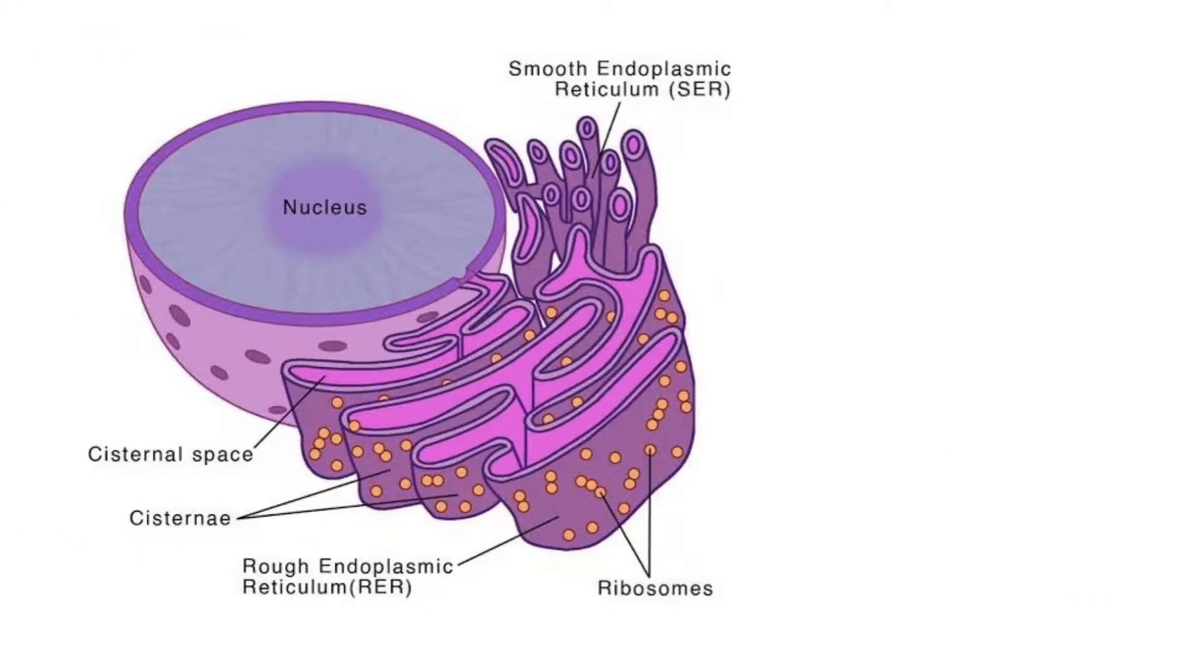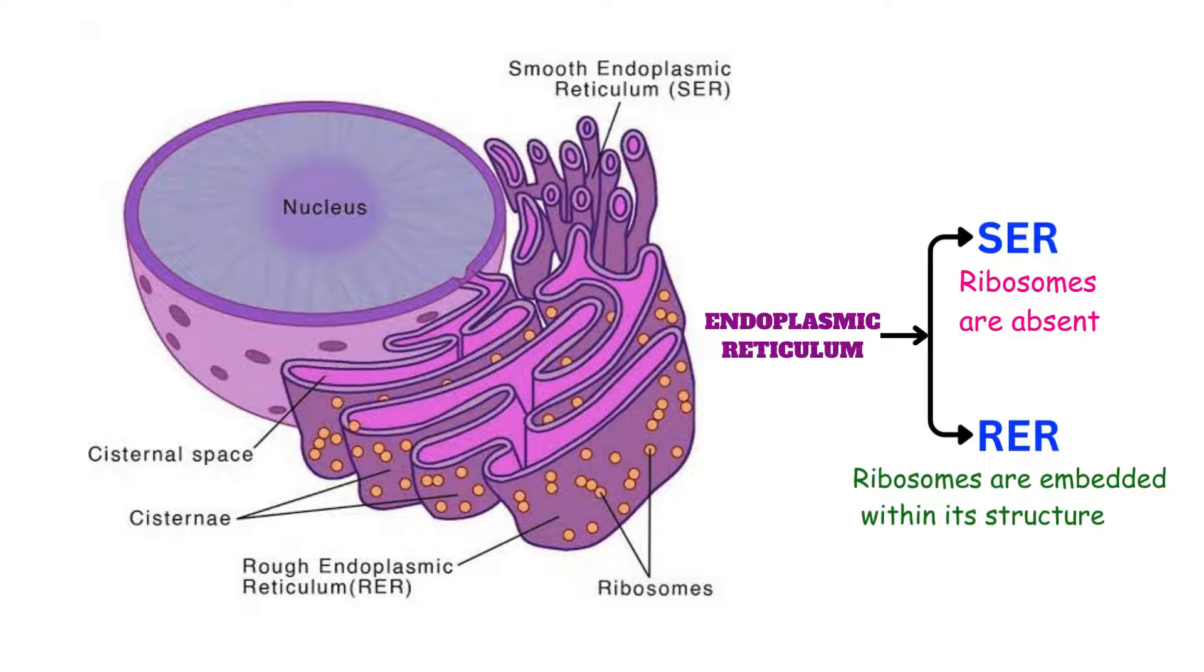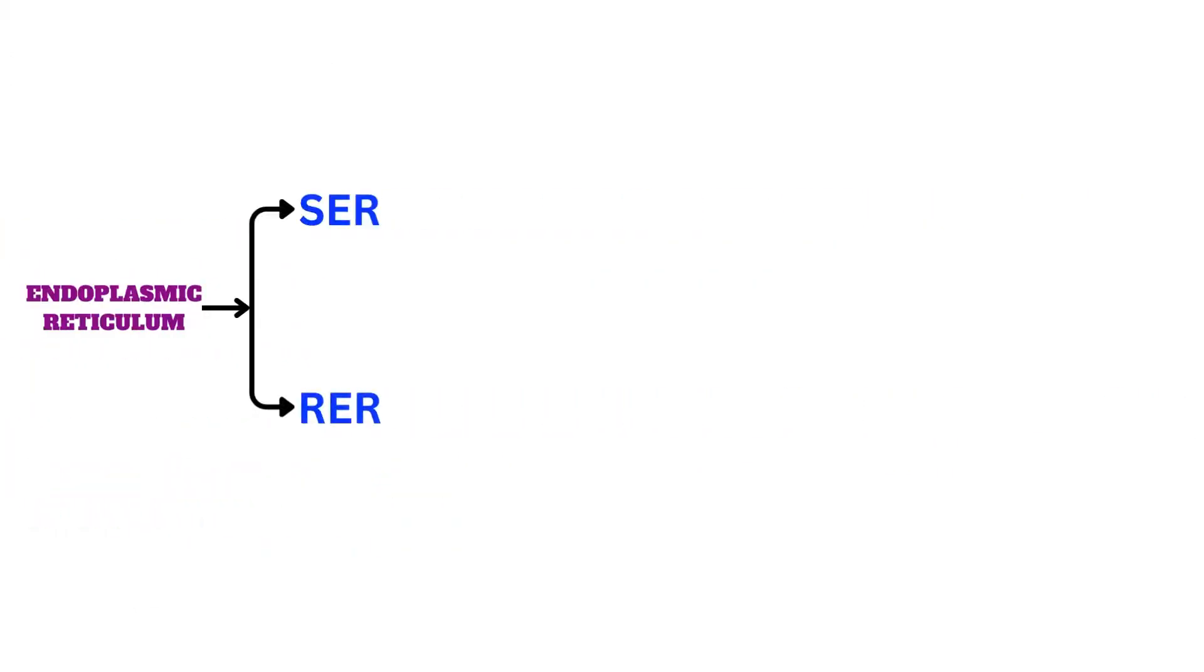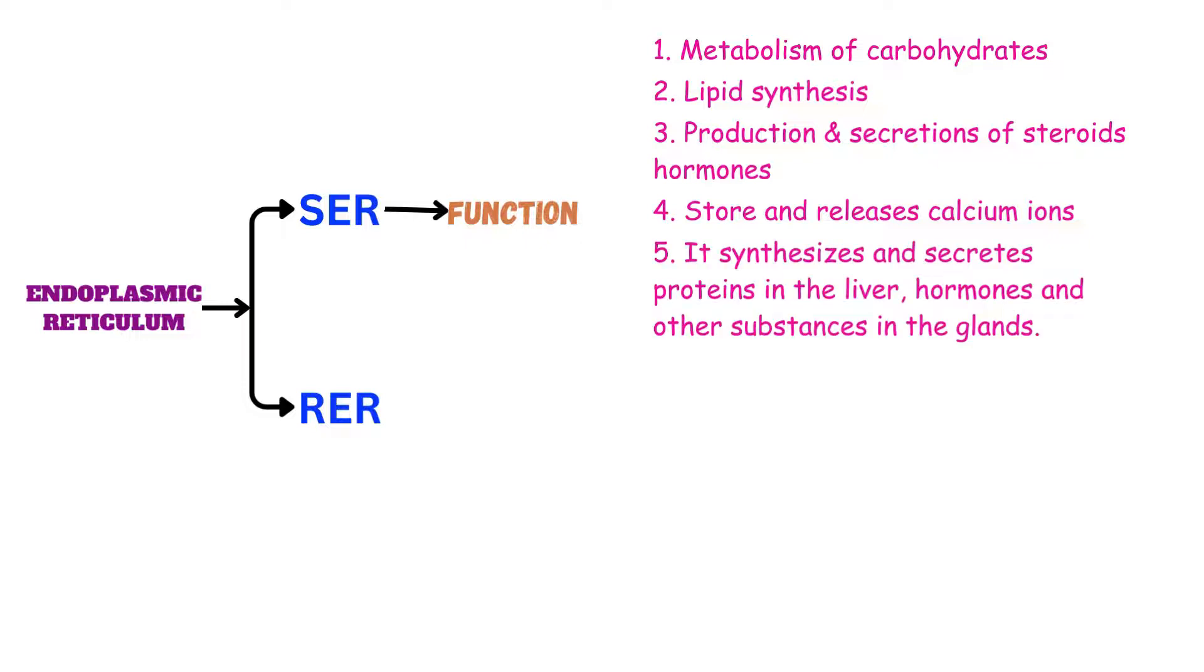Endoplasmic reticulum is of two types. First, smooth endoplasmic reticulum, and the second, rough endoplasmic reticulum. In smooth endoplasmic reticulum, ribosomes are absent, and in rough endoplasmic reticulum, ribosomes are embedded within its structure. The basic functions of smooth endoplasmic reticulum are: carbohydrate metabolism, lipid synthesis, production and secretion of steroid hormones, storage and release of calcium ions. It synthesizes and secretes proteins in the liver, hormones and other substances in the glands.